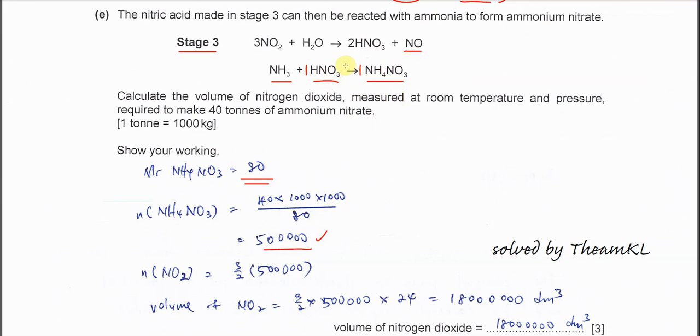Then we know that the nitric acid is in a 3 to 2 mole ratio with NO2, means 3 NO2 will form 2 HNO3. So 3 to 2 mole ratio.